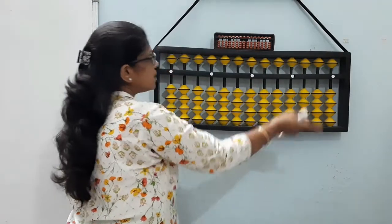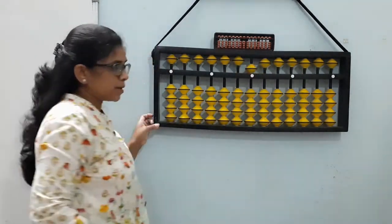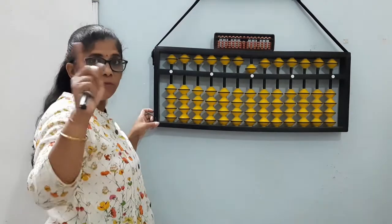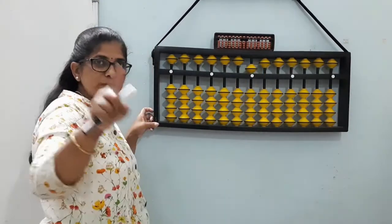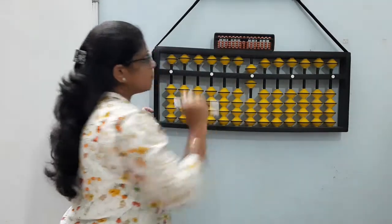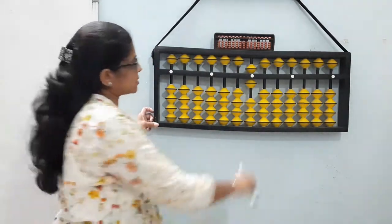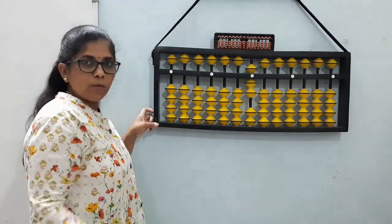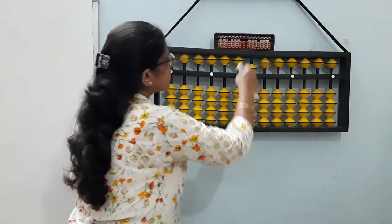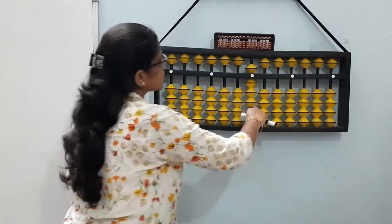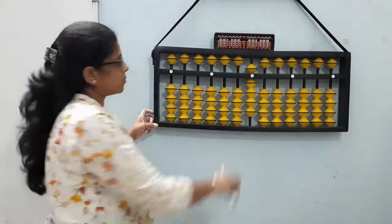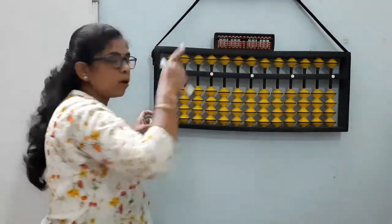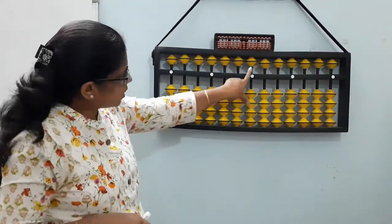Now next, the upper bead, this single bead, the value of that upper bead is five. Yes, the value of this single bead is five. Along with this five, when one comes, it becomes six. Two, five plus two, it's seven. Five and three, eight. Five and four, nine. So in this way, all our single digit numbers come here.